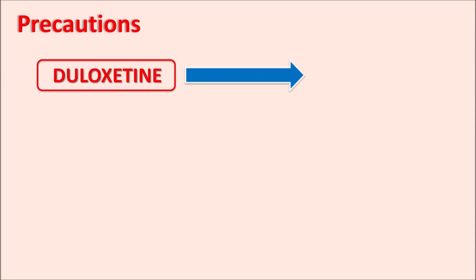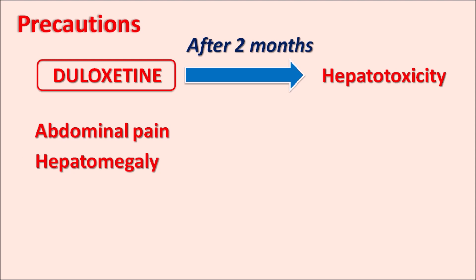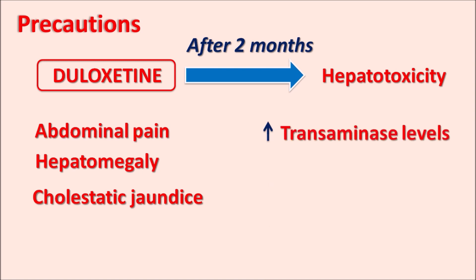What are the precautions? One important precaution is that Duloxetine can produce hepatotoxicity in patients. After about two months of treatment, hepatotoxicity may develop, and symptoms can include abdominal pain, hepatomegaly — enlargement of the liver — and cholestatic jaundice. Similarly, increased transaminase levels such as elevated ALT (alanine transaminase) and AST (aspartate transaminase) may be observed, indicating hepatic injury. So this drug should be carefully given to patients who are at higher risk for hepatic damage.